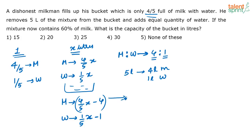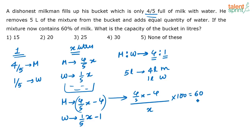This remaining milk constitutes 60% when the bucket is refilled with water. So we can write: [(4/5)x minus 4] divided by x, multiplied by 100, equals 60. You solve for x to find the capacity. This is the normal algebraic way to solve the question.